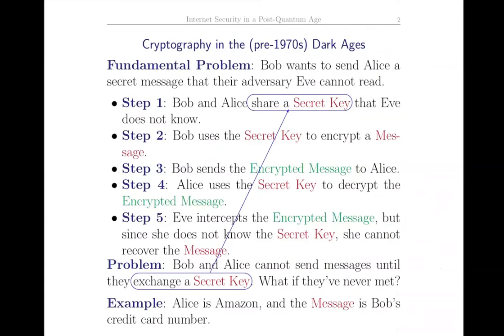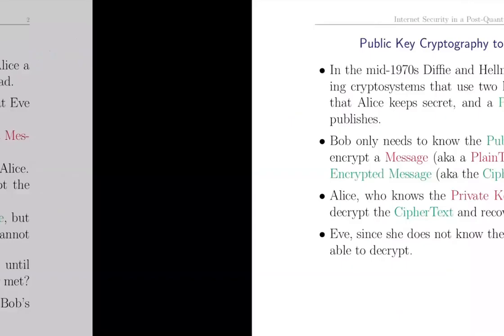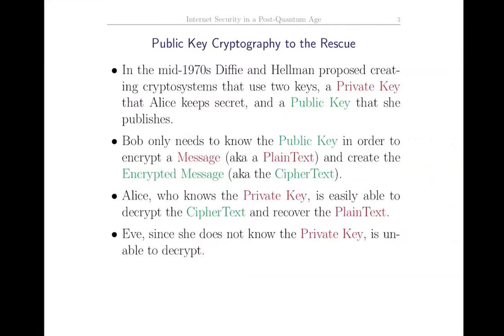What happens if they've never met and they have no secure communication channel? This became especially relevant once the internet existed. For example, if Alice is Amazon and the message is Bob's credit card number, they've never previously communicated, but he wants to send his credit card number so he can buy stuff. So in the mid-1970s, Diffie and Hellman proposed creating cryptosystems that use two different keys: a private key that Alice keeps secret and a public key that she publishes.